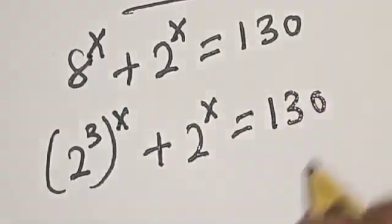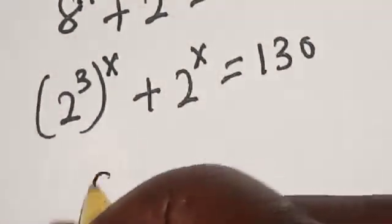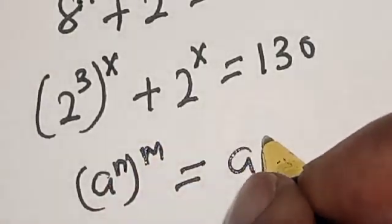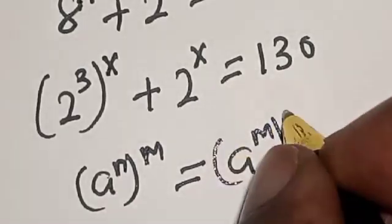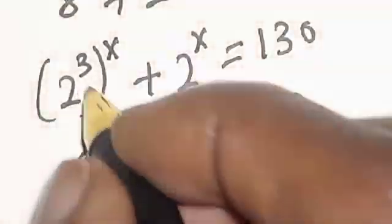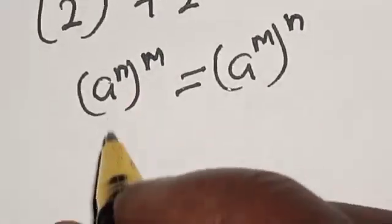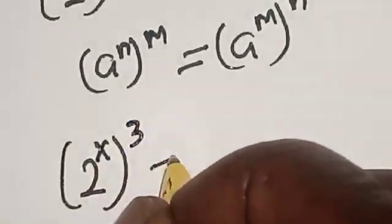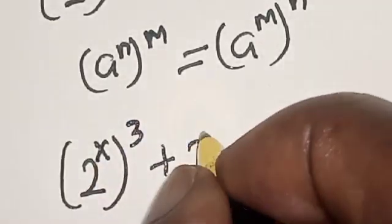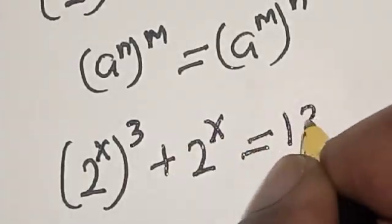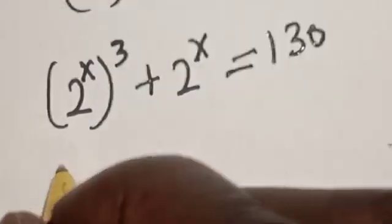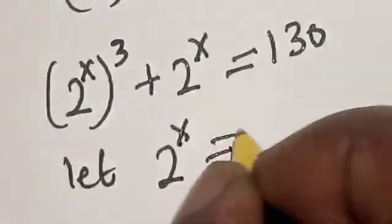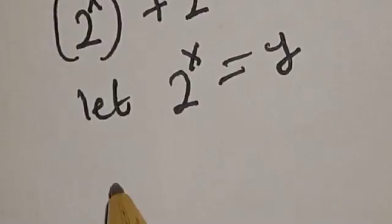Now remember this rule: if you have a raised to power n, raised to power m, this is equal to a raised to power m raised to power n. Then 2 raised to power 3 raised to power s can also be written as 2 raised to power s, raised to power 3, plus 2 raised to power s is equal to 130. Now from here, let 2 raised to power s equal y, and substitute.